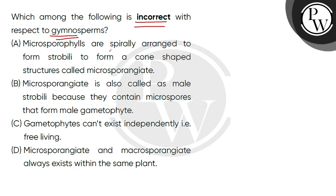Option A says: microsporophylls are spirally arranged to form strobili. So the microsporophylls are spirally arranged so that they form strobili, which forms a cone-shaped structure — we call it microsporangiate. This is a correct statement.